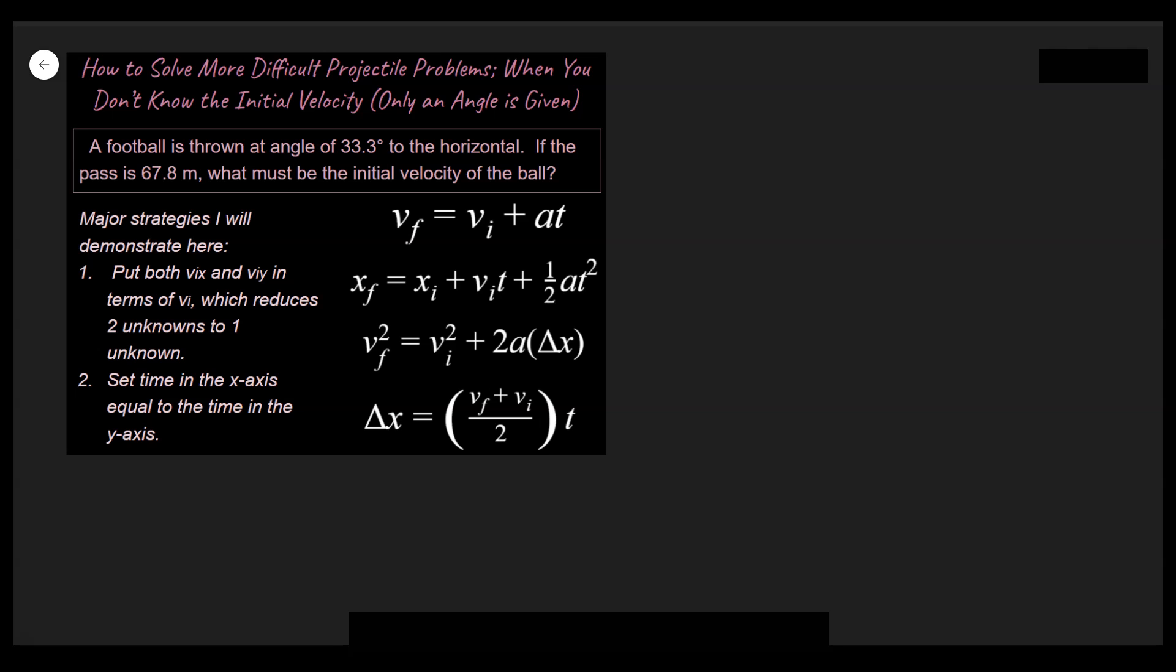Hey, welcome back. Today we're going to be talking through how to do one of the most difficult style problems that you're going to see in high school physics, and that is doing a projectile problem that does not have the initial velocity. It only has a range extended out, like this problem here with the football.